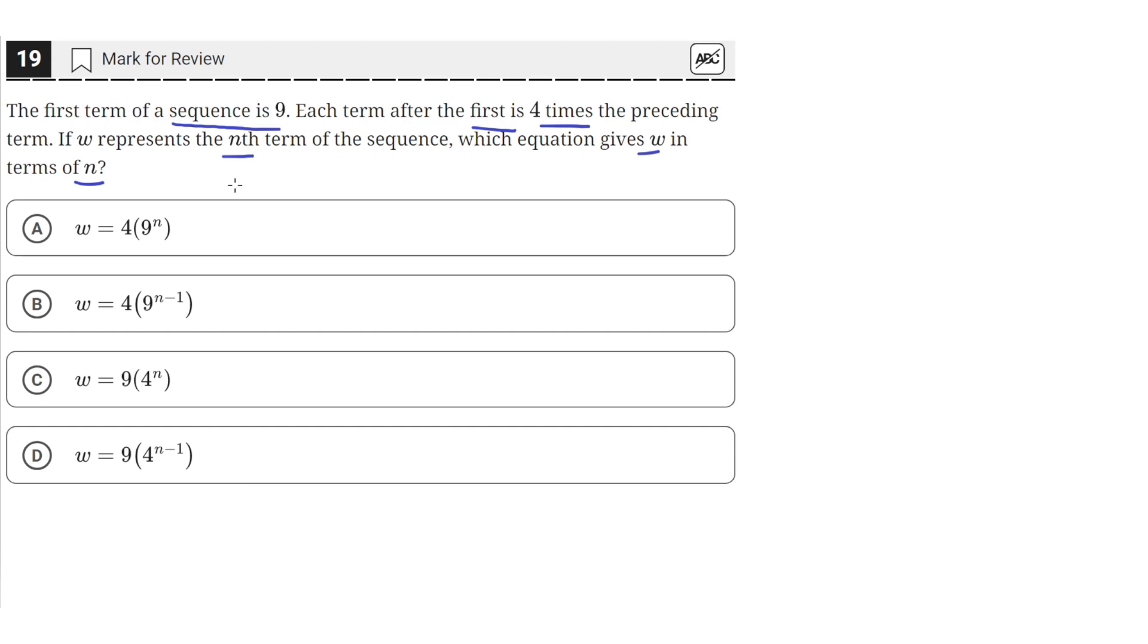Okay, so we need to find which one of these gives us a sequence where the first term is nine and every term after that is four times the previous term. And the one that reflects that is answer choice D, because it has four as the base of the exponent, and the exponent is n minus one.